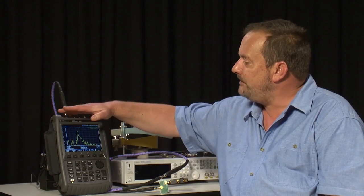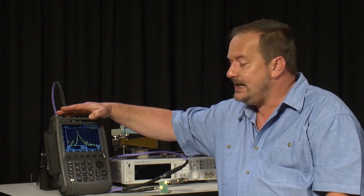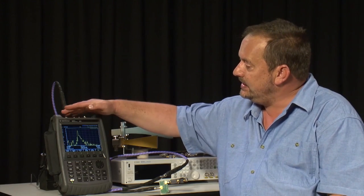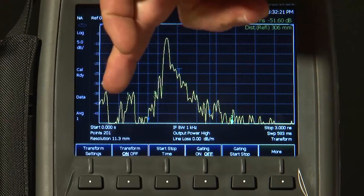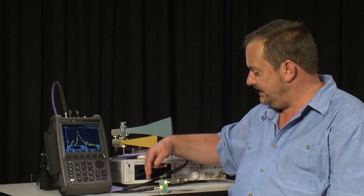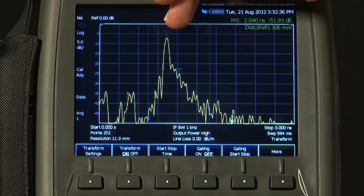Now 0 seconds is our time reference and that corresponds exactly with the calibration plane when we calibrated. In this instance we are using the CalReady that came with the FieldFox, so we know that 0 seconds is this point here. And as we move along the trace, we are moving through the measurement system until eventually we reach the filter, which is this large response here in the middle of the display.